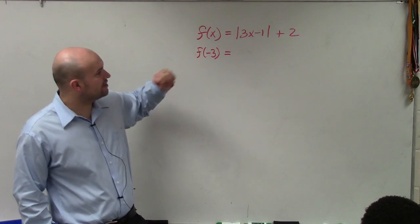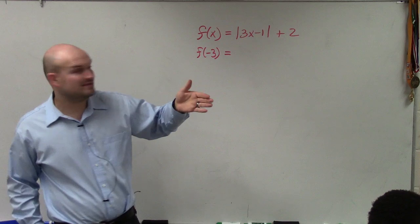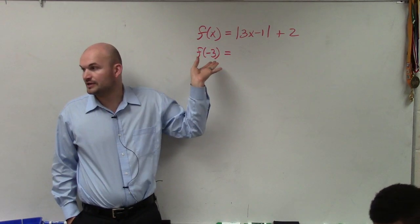So in this example, our function is the absolute value of 3x minus 1 plus 2. And I want to find the value of my function at the interval of negative 3.